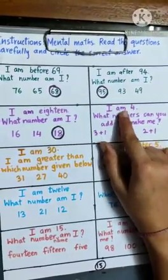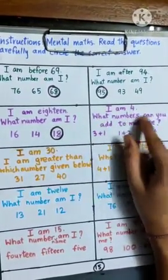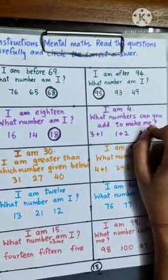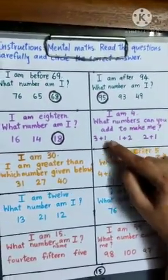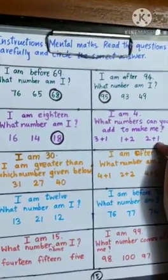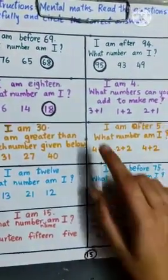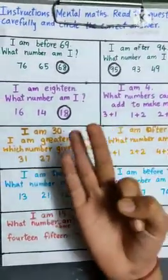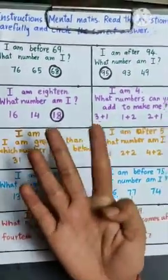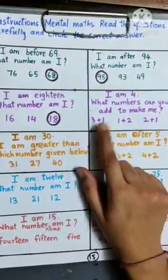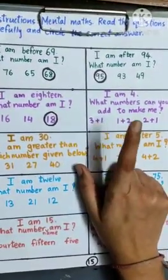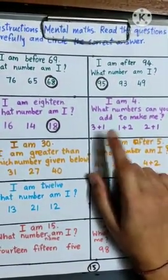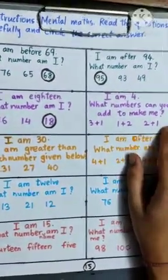Now, here. I am 4. What numbers can you add to make me? 3 plus 1. So, we have to circle the option which we will add to make number 4. 3 plus 1: 1, 2, 3, and then we have to add 1: 1, 2, 3, 4. This makes 4. So, we can circle it. But, let us first see the other 2 options.